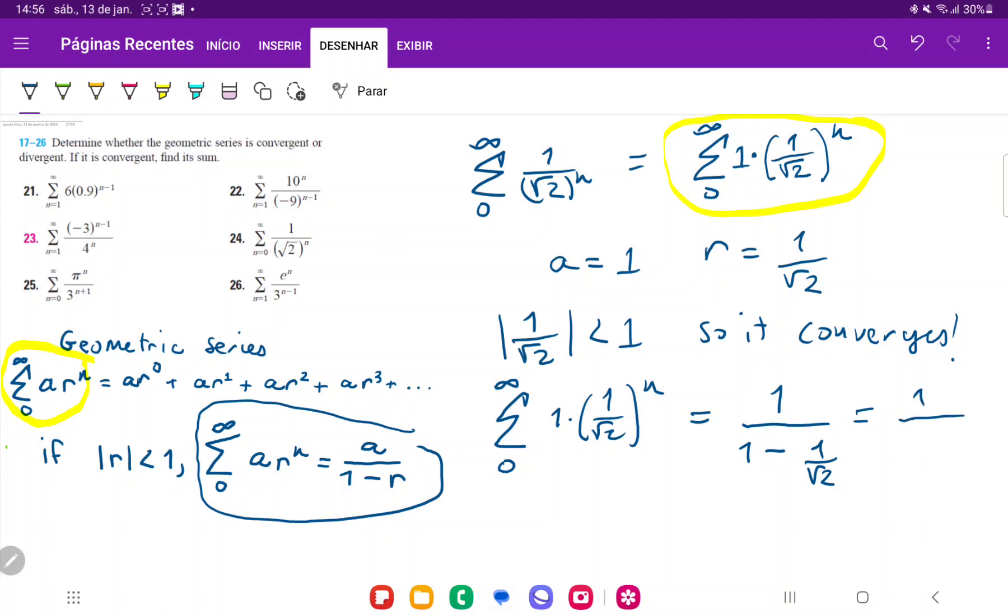That's going to be 1 over square root of 2 minus 1 all over square root of 2, which is the same thing as square root of 2 over square root of 2 minus 1. So this here is the result for our sum of this geometric series.